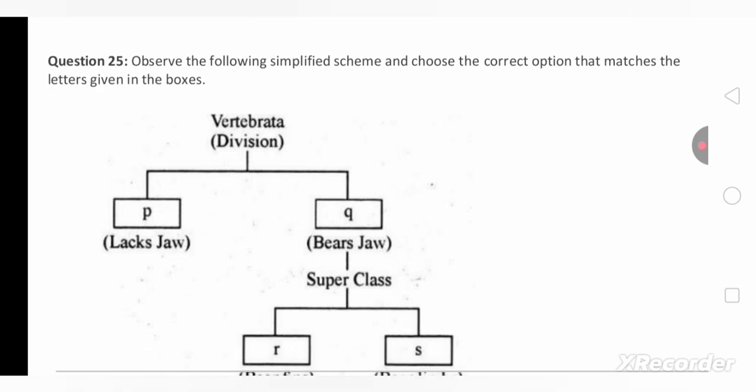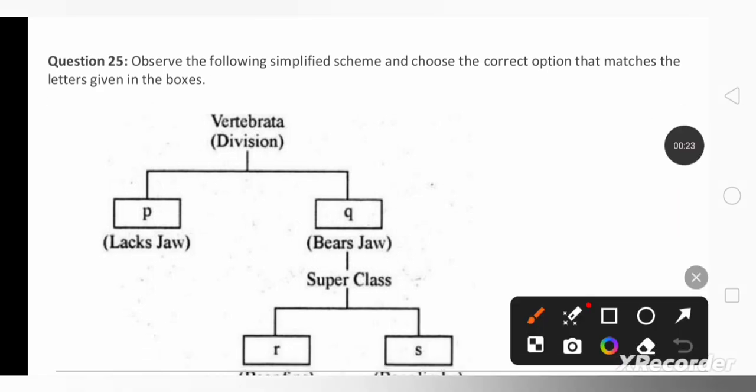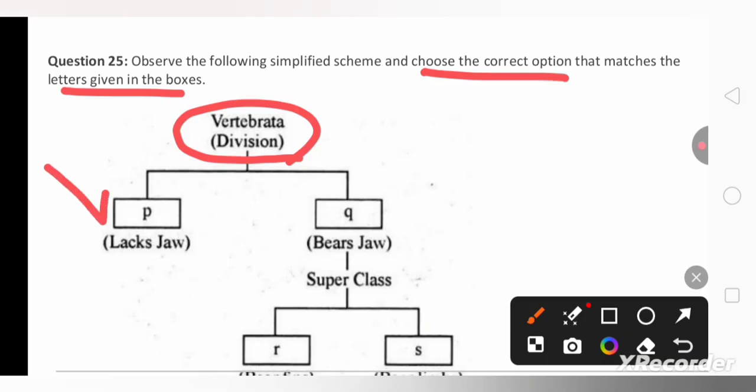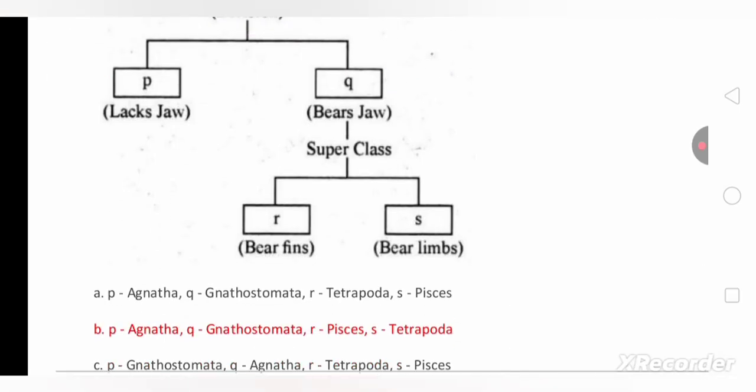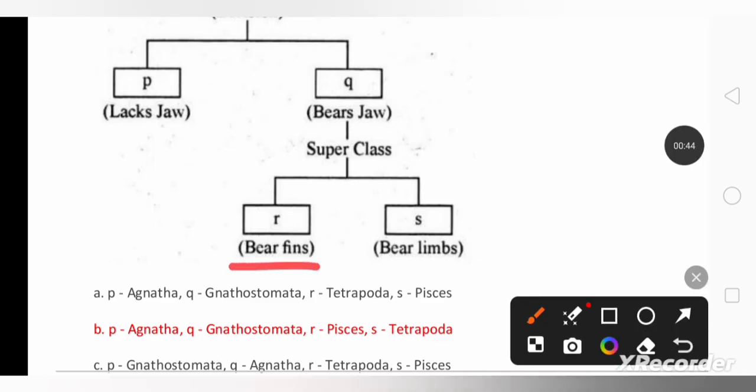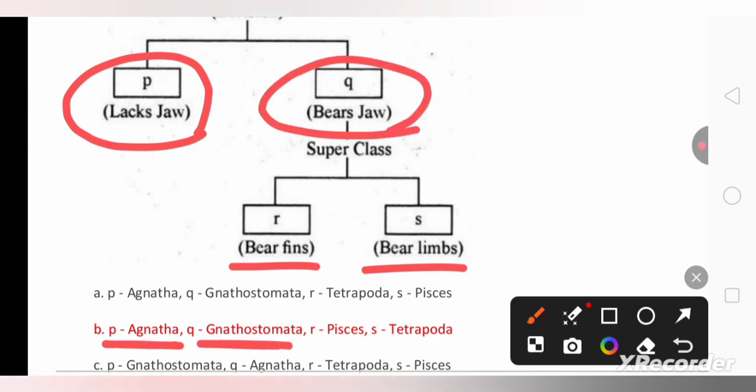In the next question observe the following simplified scheme and choose the correct option that matches the letter given in the boxes. So vertebrates divided into the fishes that lack jaw and the fishes that has a jaw. Again the fishes having jaws are divided into the fishes having fins and the fishes having limbs. They are developed as tetrapods.